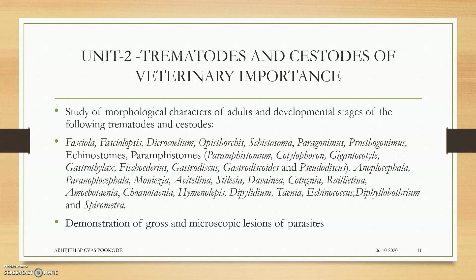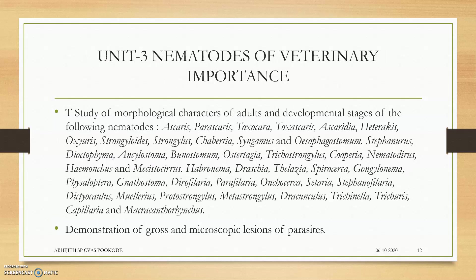In Unit 2 practicals, trematodes and cestodes of veterinary importance — morphological characters and demonstration of gross and microscopic lesions produced by the parasites, which are trematodes and cestodes. Unit 3 practical, nematodes of veterinary importance, will be dealing with the gross and microscopic lesions produced by the nematode parasites.